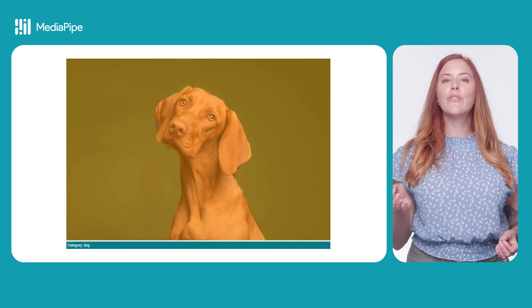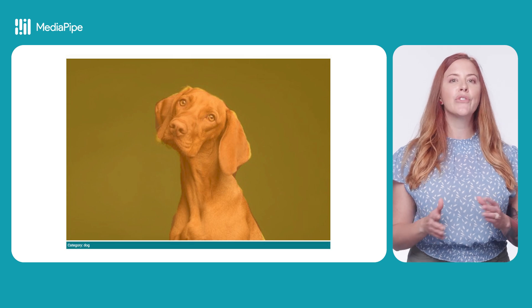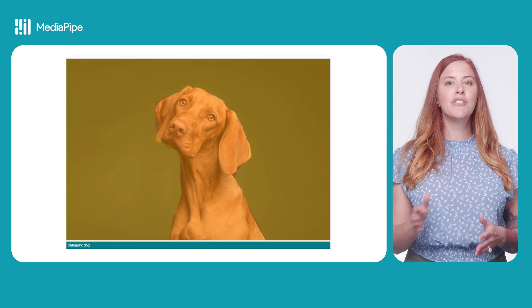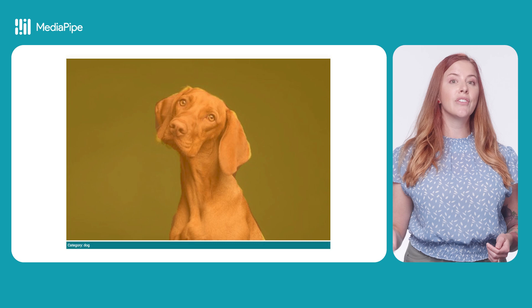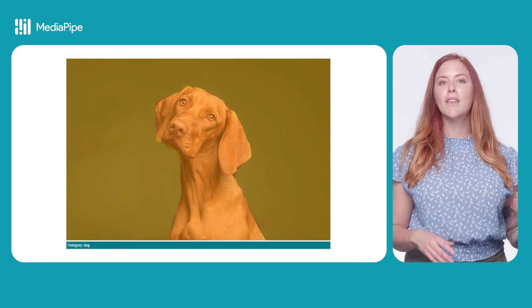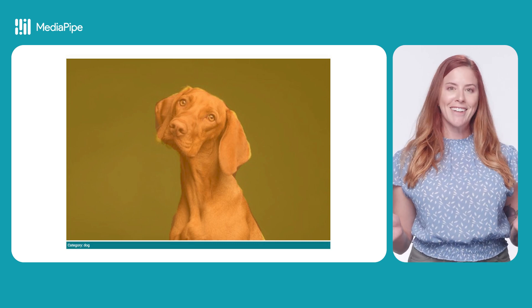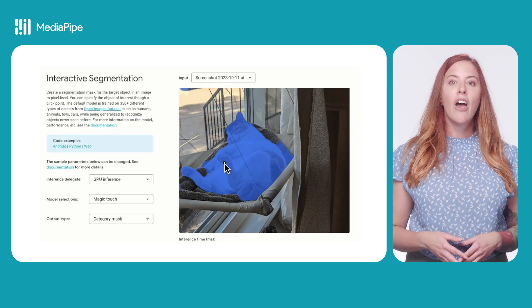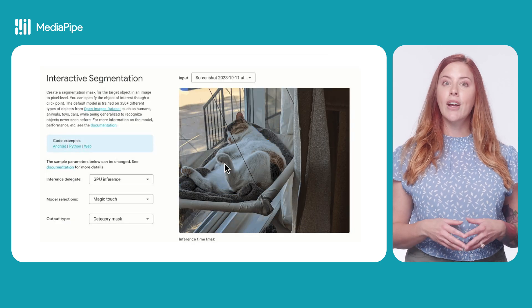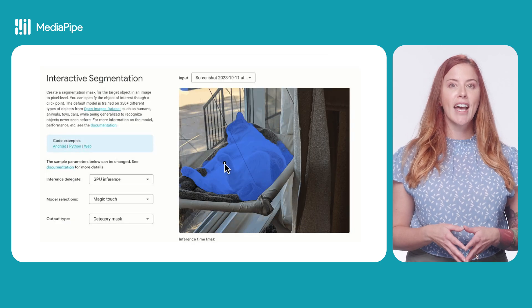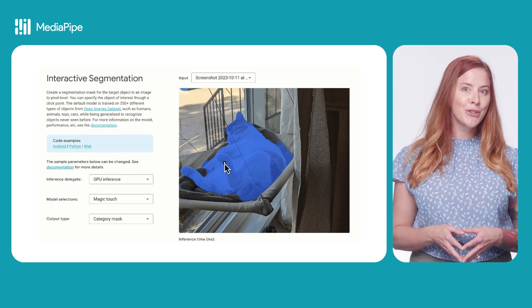And if you don't need an interactive component, MediaPipe also offers an image segmentation task with models for segmenting selfies and various objects like backgrounds, dogs, cats, people, or potted plants. You can try out the image segmentation and interactive segmentation tasks in MediaPipe Studio to see which works best for your use case.